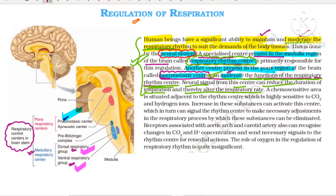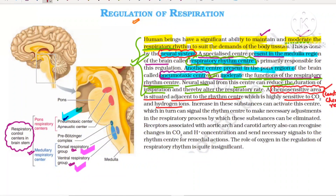Next, they are focusing on the chemosensitive area. This chemosensitive area is present near the respiratory rhythm center — it is situated adjacent to the respiratory rhythm center, meaning it is present near the medulla. That is why this chemosensitive area is known as the central chemoreceptor. They are sensitive to carbon dioxide and hydrogen ions — not for oxygen. An increase in carbon dioxide and hydrogen ion concentration activates the chemosensitive area, which sends a signal to the rhythm center to make necessary adjustments so that these substances can be eliminated.